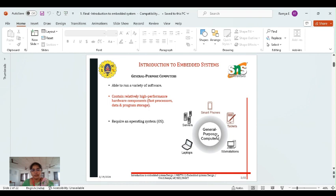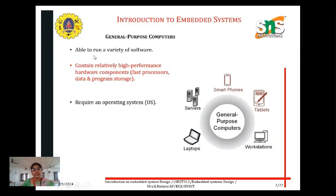So we have to know about general purpose computers. A general purpose computer is able to run a variety of software. It contains relatively high performance hardware components, a fast processor and data. It requires an operating system. Examples of general purpose computers include laptops, workstations, tablets, smartphones, and servers.